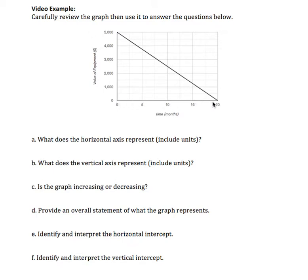The horizontal axis is given to us as time in months, and the values start at zero and go up to 20 months.